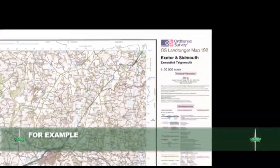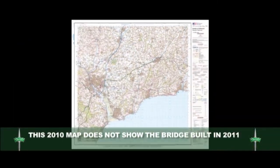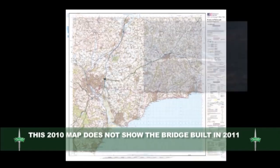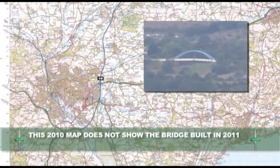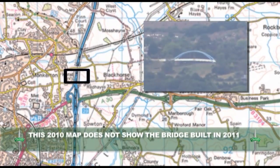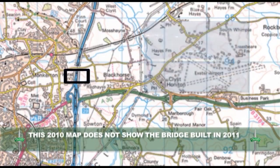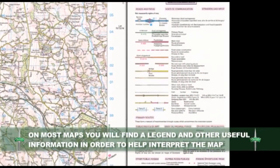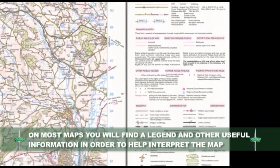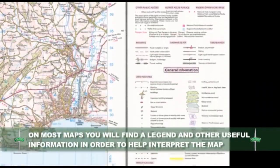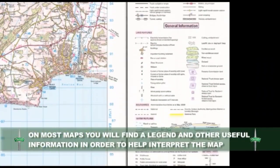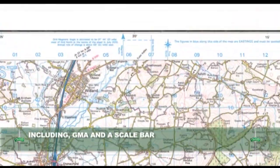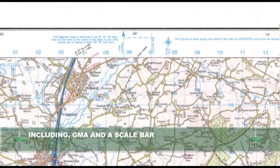For example, this 2010 map does not show the bridge built in 2011. On most maps you will find a legend and other useful information in order to help interpret the map, including GMA and a scale bar.